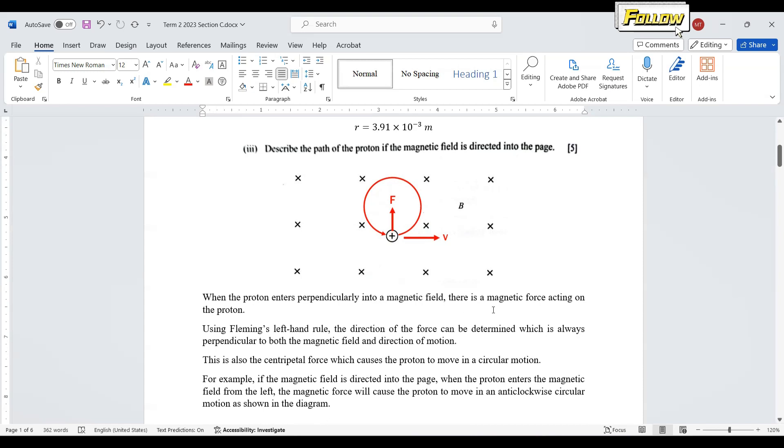There is a magnetic force acting on the proton. Using Fleming's left-hand rule, the direction of the force can be determined, which is always perpendicular to both the magnetic field and the direction of motion.